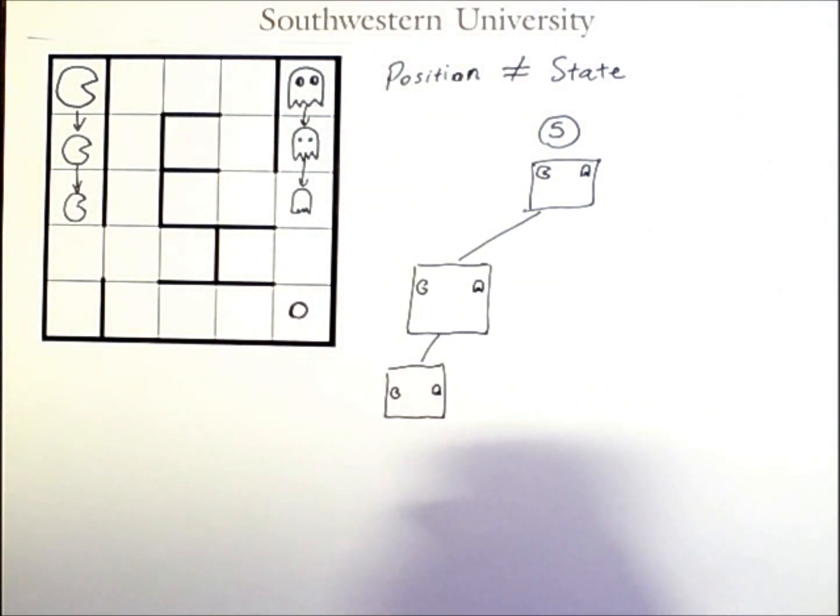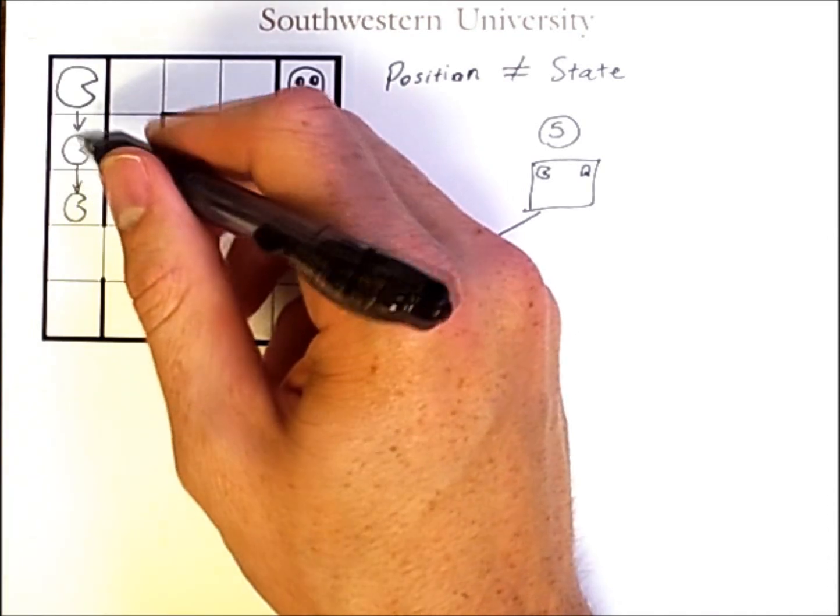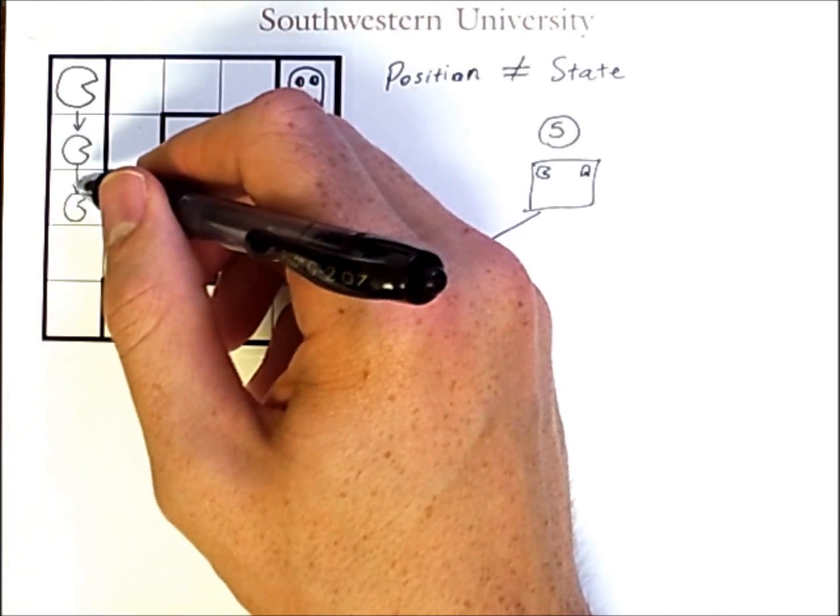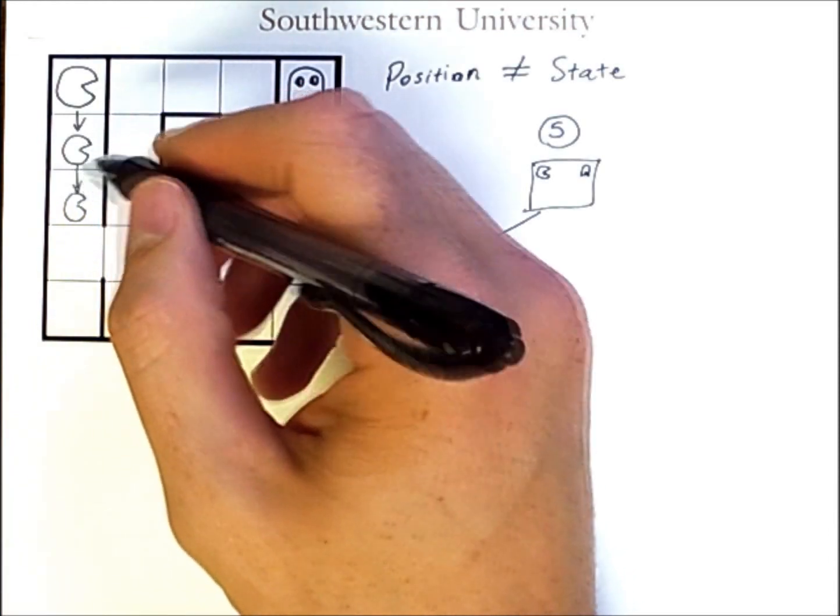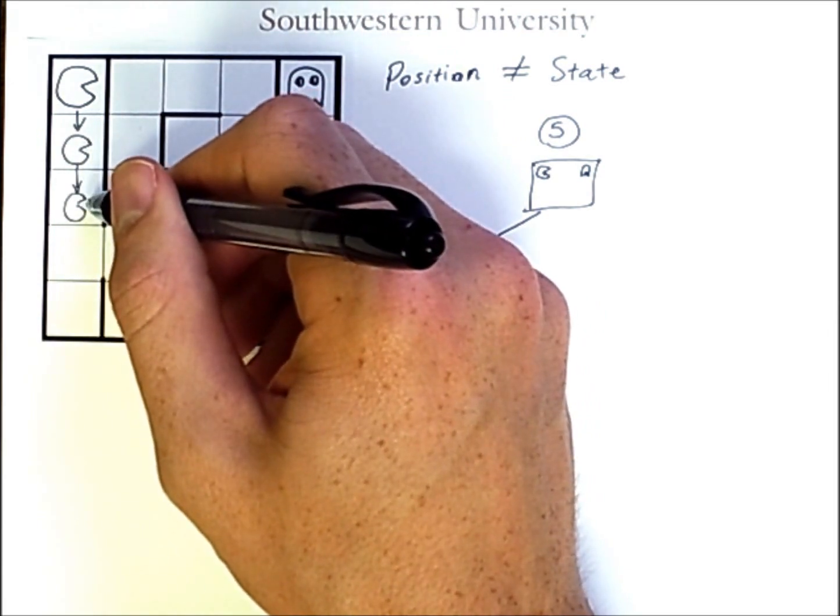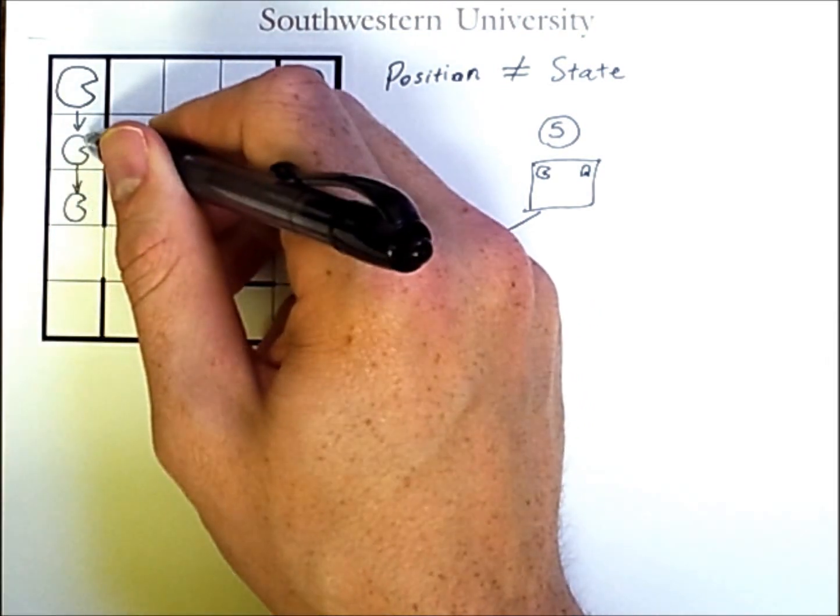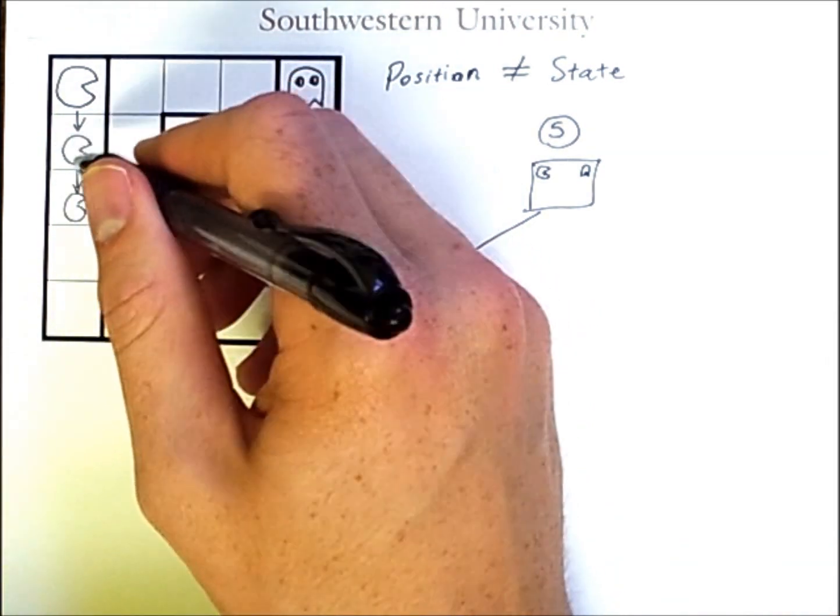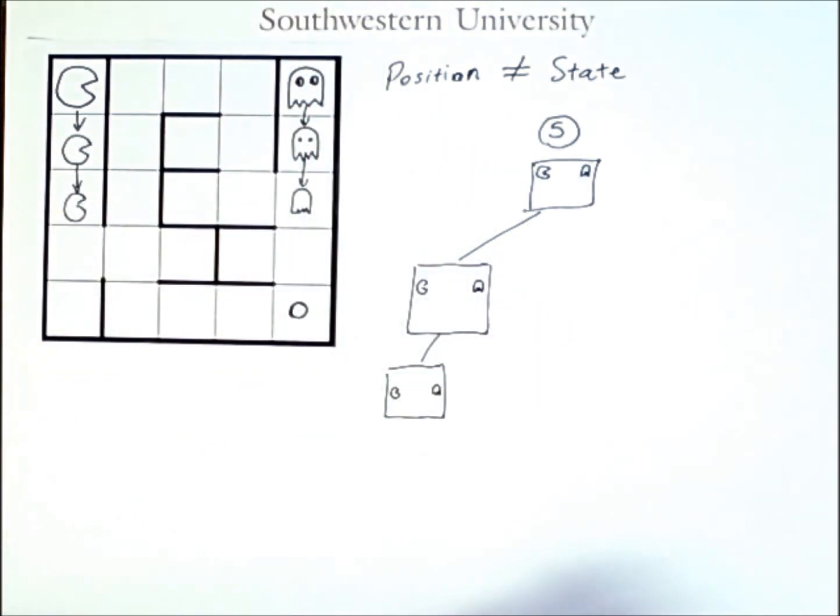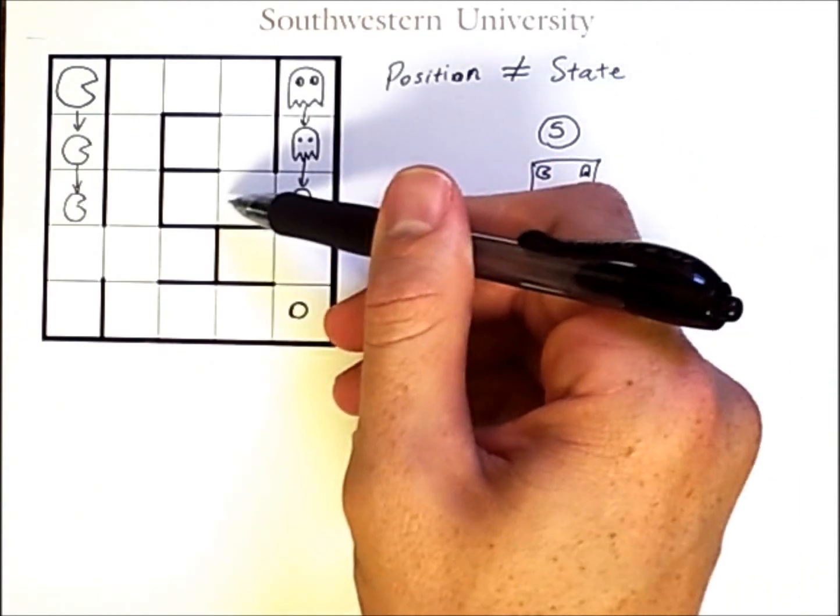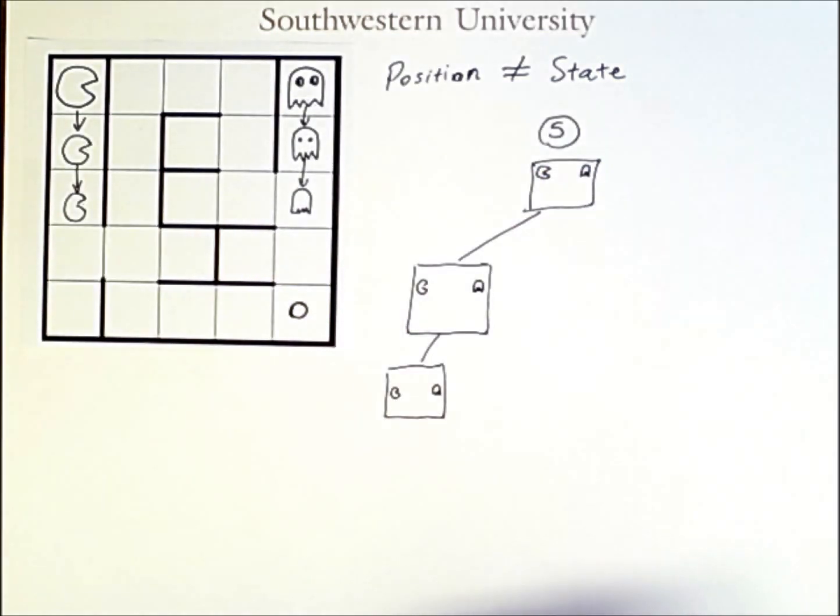Now, here, of course, I say that we won't visit states we've seen before. But, if Pac-Man were to move up, back to a position that it has previously occupied, the ghost would move towards it, closer. In other words, it would be a different state.